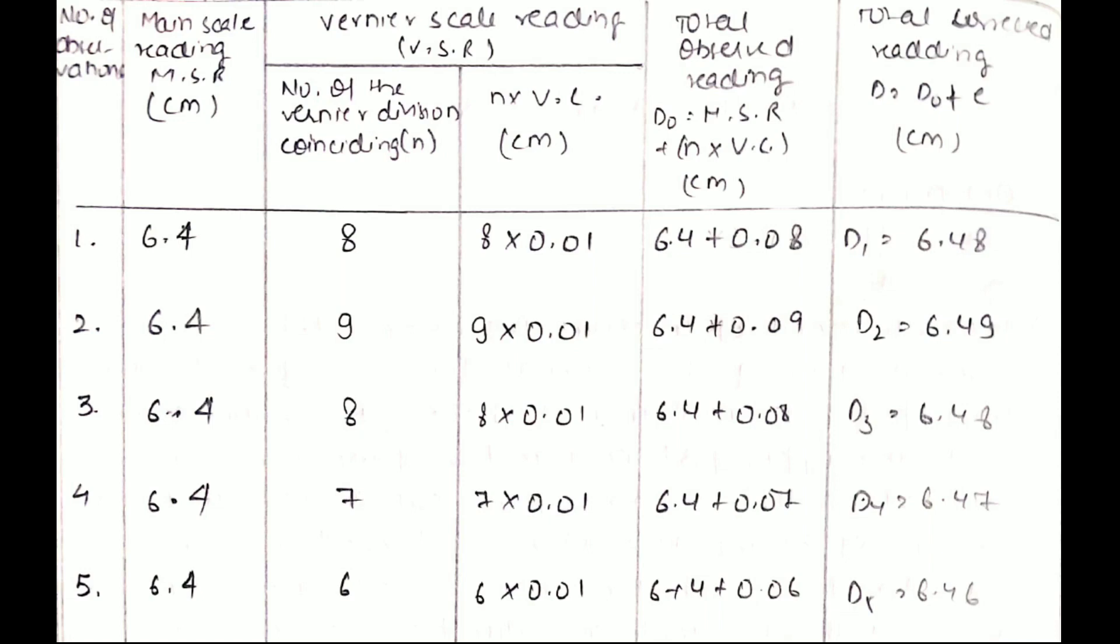These are the different readings obtained after measuring the diameter of the beaker using vernier caliper. The main scale reading, as I'd already mentioned, always remains constant. It was for me 6.4 centimeter. Then I got various numbers of divisions coinciding: it was 8, 9, 8, 7, and 6.